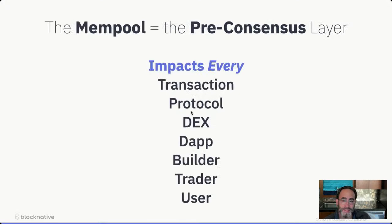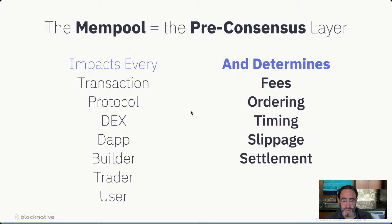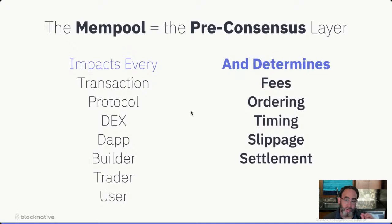Getting into mempool 101 — as mentioned, it's the pre-consensus layer. Every transaction, every protocol, DEX, builder, trader, and user deals with the mempool. The pre-consensus layer determines the fees you pay. Gas fees have been all over the place on Ethereum — the reality of gas fees is a function purely of what's going on in the mempool. It affects transaction ordering, where many players in the ecosystem are beginning to get much more precise and provide more visibility and control into the nature of transaction ordering and how it impacts settlement. It also affects timing, how long it takes, and the slippage associated with any transactions you're doing.